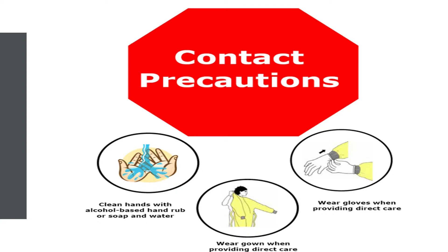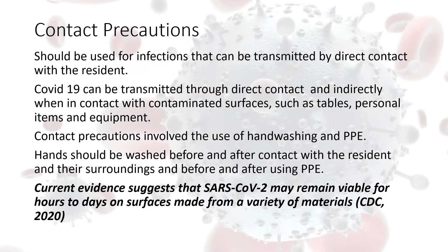Contact precautions, as the name implies, relate to where the virus could be transmitted through contact. They should be used for infections that can be transmitted by direct contact with the resident. COVID-19 can be transmitted through direct contact, but also indirectly when in contact with contaminated surfaces such as tables, personal items the resident is using, and equipment that's been used for the resident.